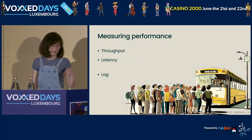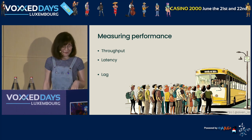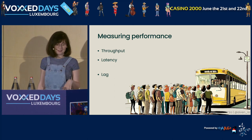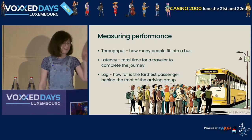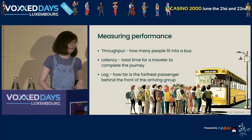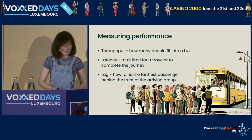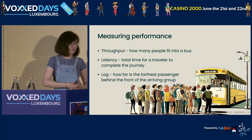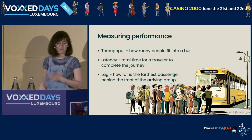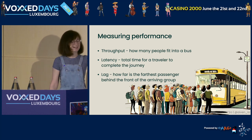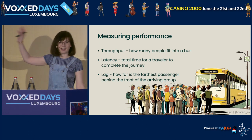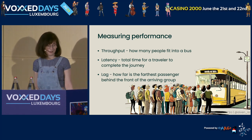I have a bus analogy where passengers are records in the system. Throughput is how many people can fit into the bus, latency is the total time it takes for a traveler to complete a journey, and lag is how far the fastest passenger is behind the head of the arriving group.